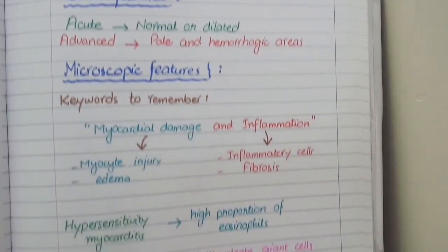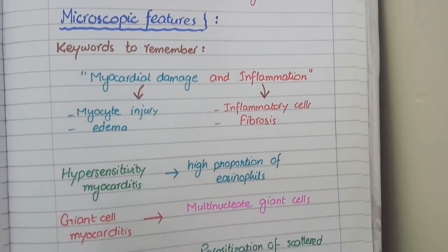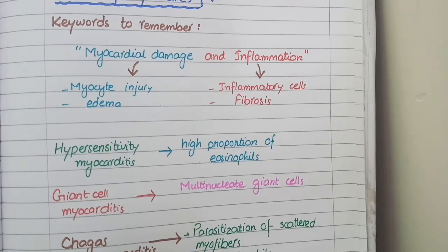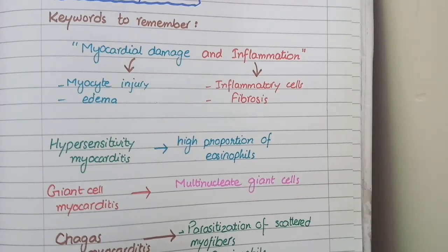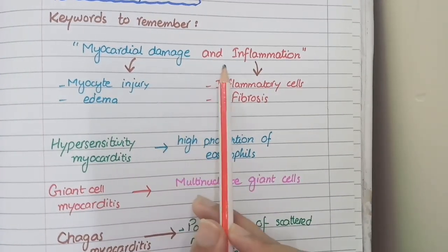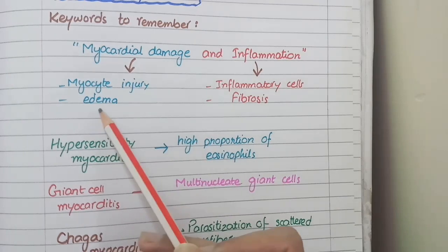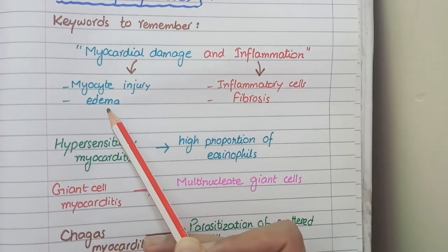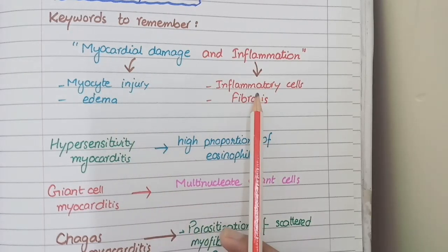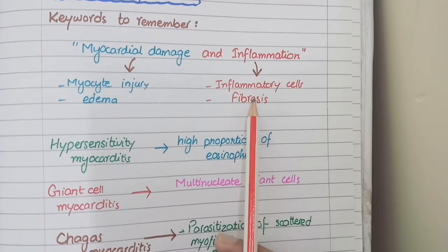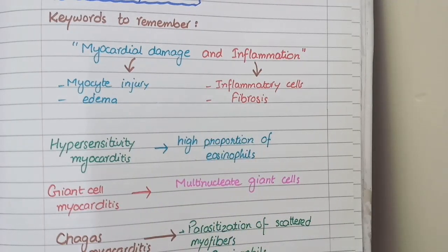For microscopic features of myocarditis, the keywords to focus on are myocardial damage and inflammation. Myocarditis means myocardial damage and inflammation. Myocardial damage means you will see damaged or necrosed myocytes with edema. Inflammation means there will be infiltration of inflammatory cells and fibrosis.